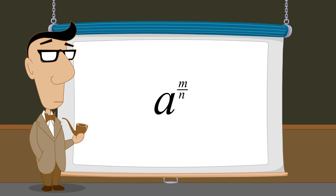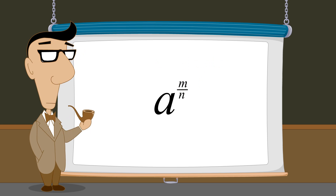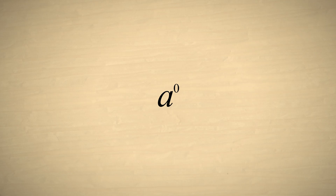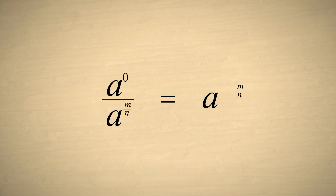In the beginning of the lecture, we said that an exponent can be any rational number, and in general, we can write this as the integers m divided by n. But what would a negative rational exponent mean? If we take a non-zero number a raised to the zero power, and divide it by the same number with a rational exponent m over n, we subtract the exponents, so the result will have an exponent of negative m over n. Since a to the zero power is equal to one, this tells us that any number with a negative rational exponent is equivalent to one over that number with the same positive rational exponent.